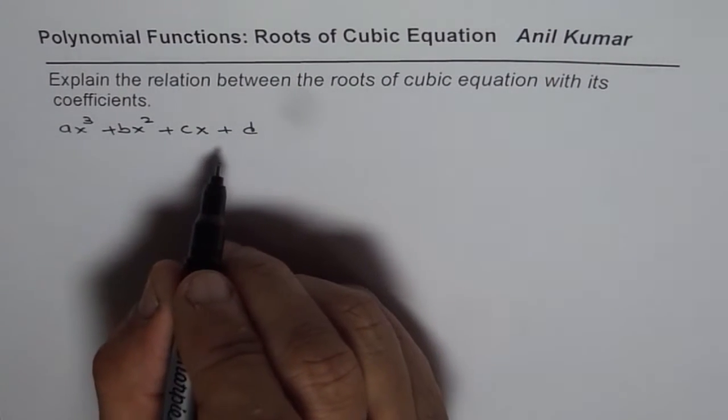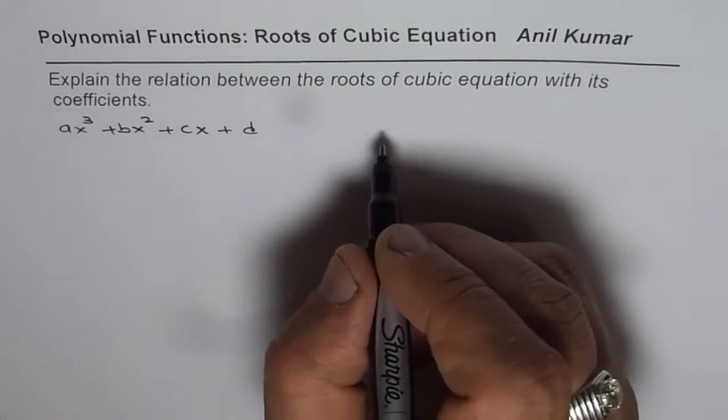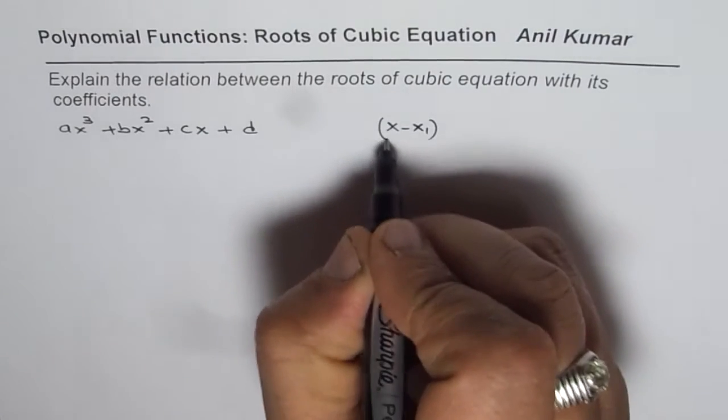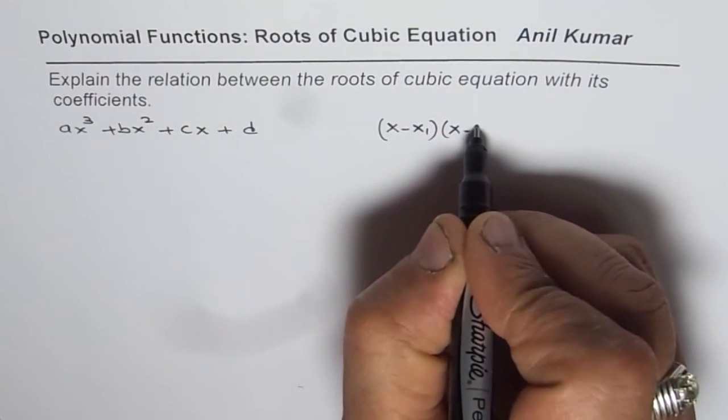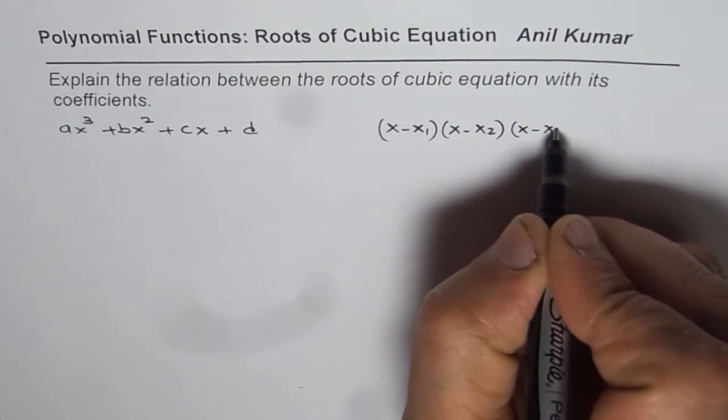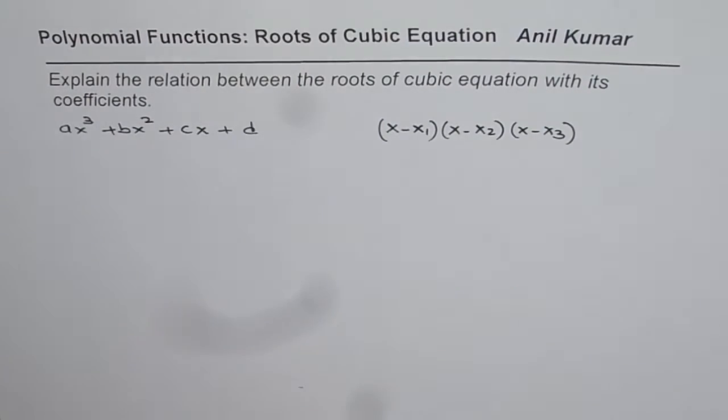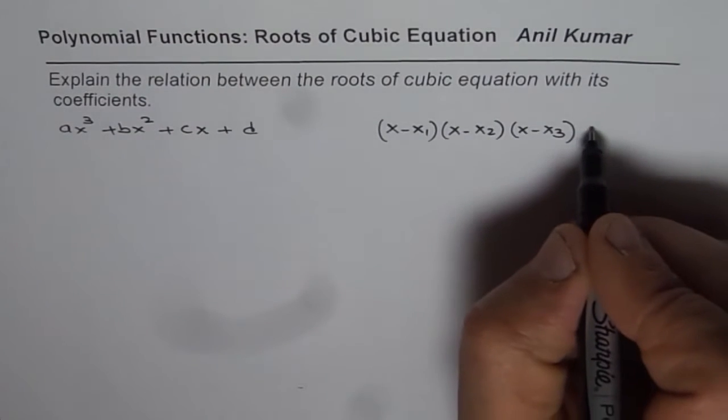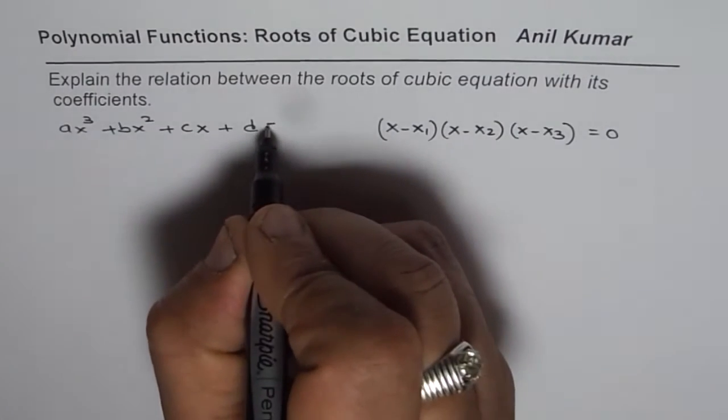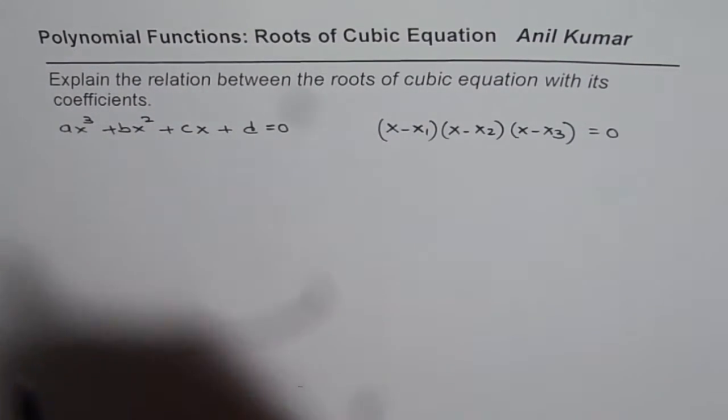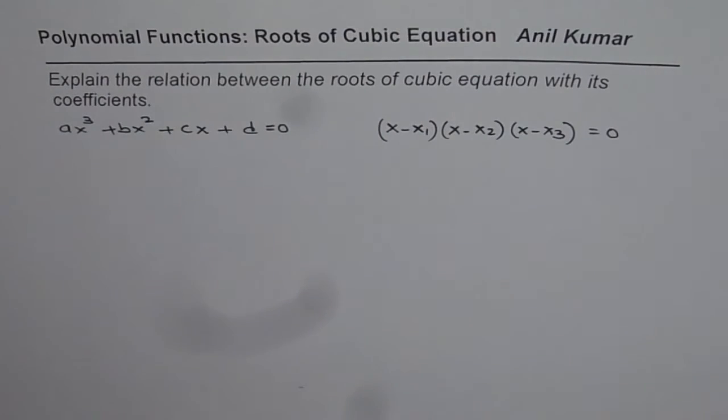Now we could also write a cubic equation in terms of its roots as (x - x₁)(x - x₂)(x - x₃). Cubic equation can have at the most three real roots. So all this equal to 0 could be one form of equation which is in factored form and here we have standard form of equation.